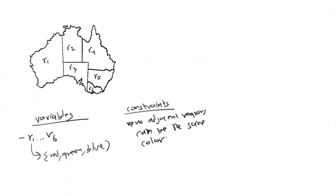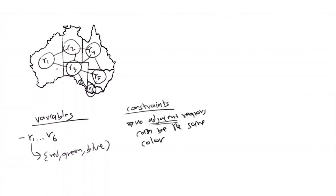You solve this the same way as any CSP. You have variables R1 through R6, each can take red, green, or blue, and you must pick values such that no adjacent regions share a color. To detect adjacency, model this as a graph — each region is a node, and edges connect neighboring regions. That way you can check the constraint systematically.